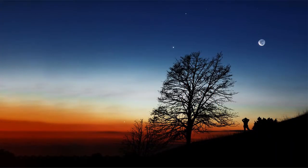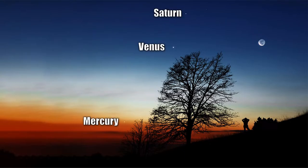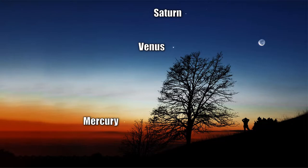Before moving on, I want to show you something incredible that most people don't realize: planets are visible with the naked eye. You don't need a telescope to see a planet. If you go outside anytime in the next month or so — November to December 2020 — at 6am and look to the east, or at 6pm and look to the west, you'll be able to see the planets I just showed you in this video.